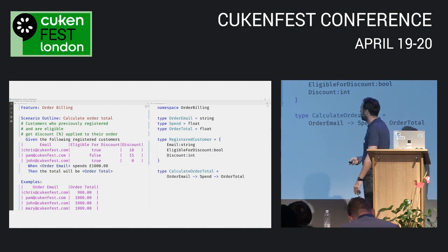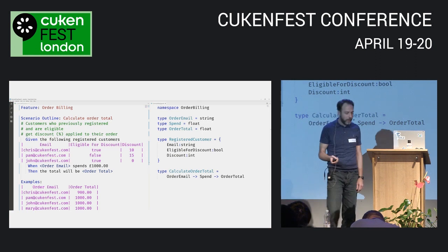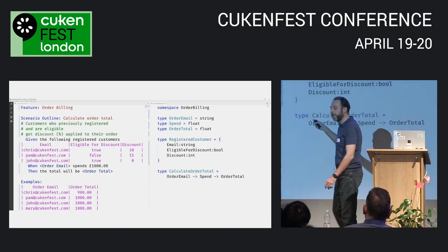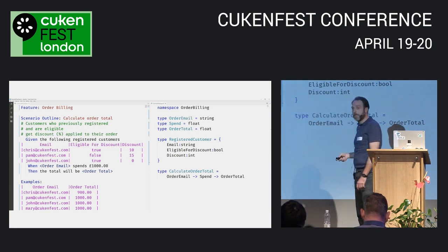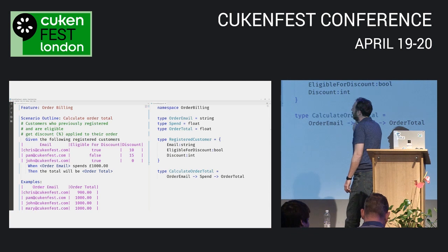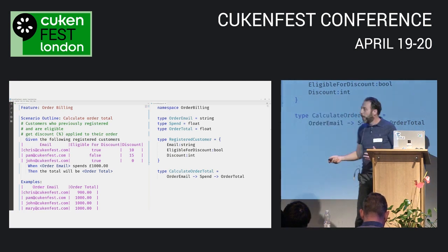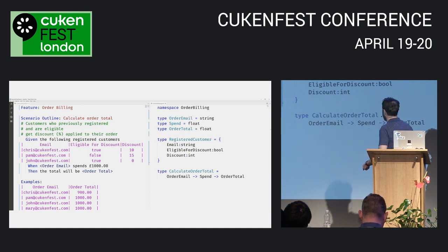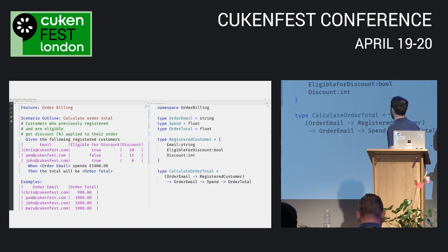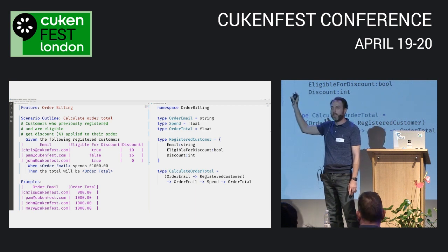In order for this signature to accurately represent the scenario I need to get that type into it. How? According to my scenario there are only three registered customers — could I pass all of them as a list? No, because I sat down with Sue from the order billing team and she told me there are millions. So what's really going on? We take the order email and use it to find a registered customer — that's just another action. I can model that action as a function and pass it into this function.